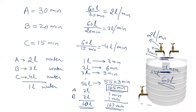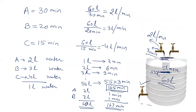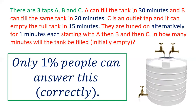People generally solve this question and get the answer as 180 minutes, which is wrong. After filling 60 liters, there is no chance for C to empty the tank — the tank is already full. The question asks how much time it takes to fill the tank, not what happens after. So the correct answer is 167 minutes.